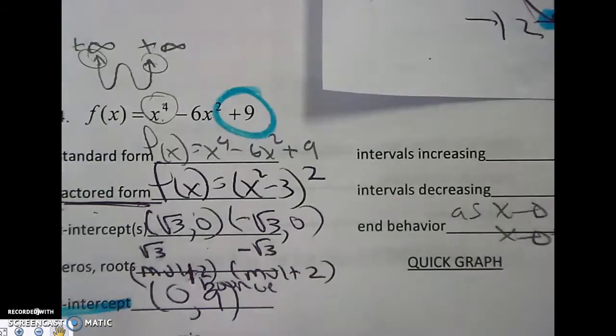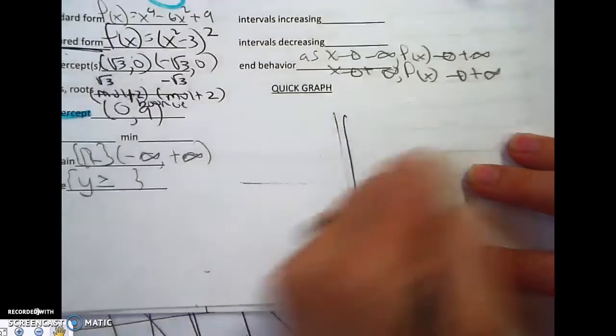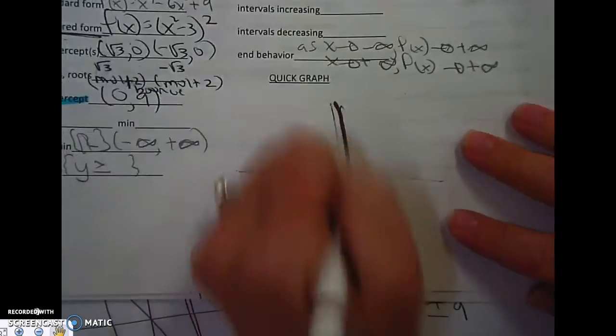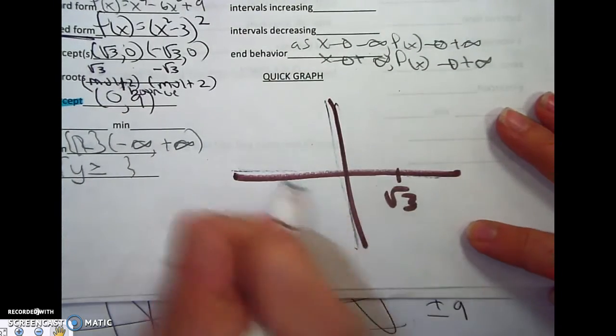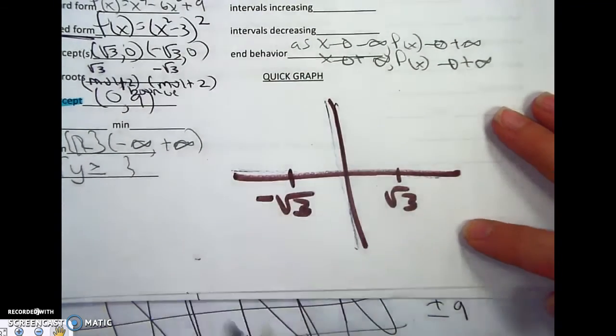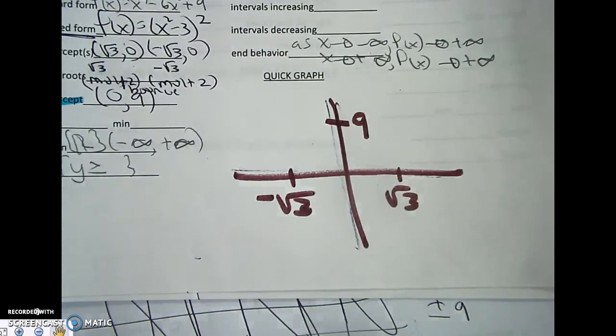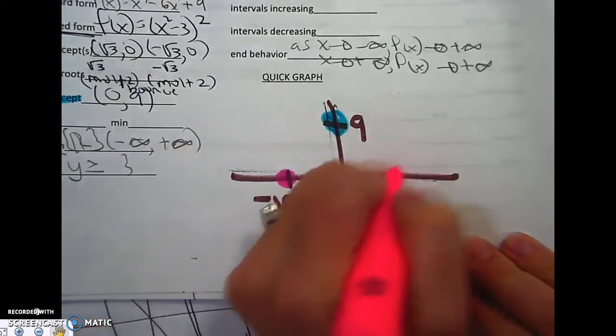In order to get the max, the min, the intervals increasing and decreasing, I'm going to quick graph. Zoom out a little bit. Now we're using brown. Sorry about that. Now remember, it's a quick graph. So rad 3, negative rad 3, and then positive 9. There's my y-intercept. There's my x-intercept.